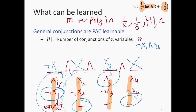We did a similar sort of thing for monotone conjunctions before. With monotone conjunctions, the negated features no longer exist, so for every position, either the feature shows up or it does not. So you get 2^n, because you get two choices for every position.